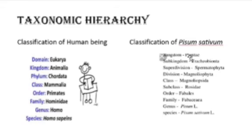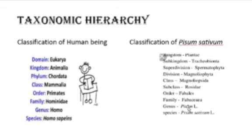For a plant example, the kingdom is Plantae. The sub-kingdom is Tracheobionta and superdivision is not required here. The division is Magnoliophyta, the class is Magnoliopsida, the order is Fabales, the family is Fabaceae, the genus is Pisum, and the species is sativum. So the scientific name of the pea plant is Pisum sativum.